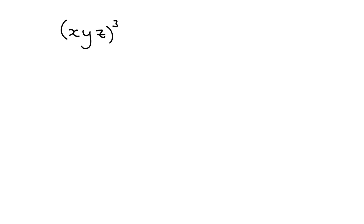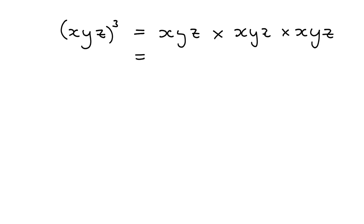Let's look at our final rule — how to deal with something like xyz all to the power of 3. With exponents, you can always figure out the rule by writing out what the exponent means. xyz to the power of 3 means xyz multiplied by xyz multiplied by xyz. Now we pull together the things that are the same: you've got 3 x's multiplied together, so x cubed; 3 y's multiplied together, so y cubed; and 3 z's multiplied together, so z cubed.